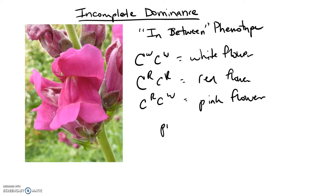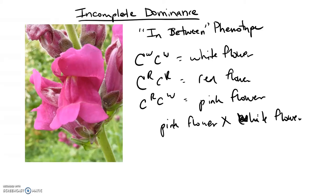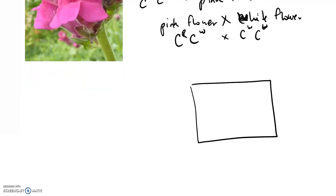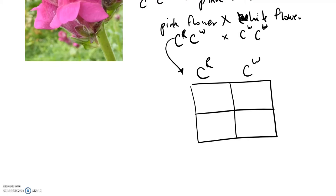Let's say we want to cross a pink flowering plant with a white flowering plant. We first need to know the genotype of the pink flowering plant, which would be one red allele and one white allele — CRCW. We're going to cross that with a white flowering plant, which has two white alleles — CWCW. Let's set up a Punnett square: one gamete from the pink parent can have the red allele while the other has the white allele, and the white parent can only produce white alleles.